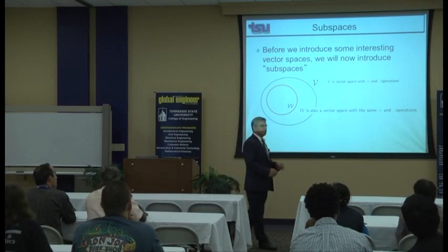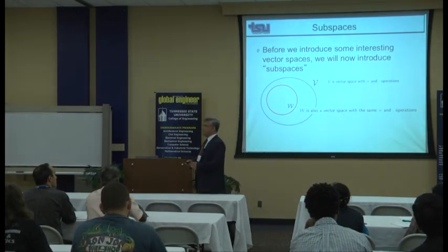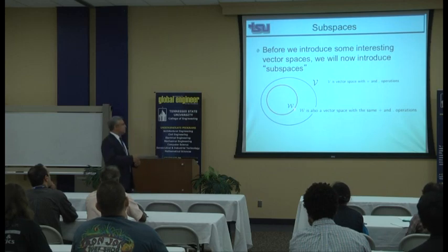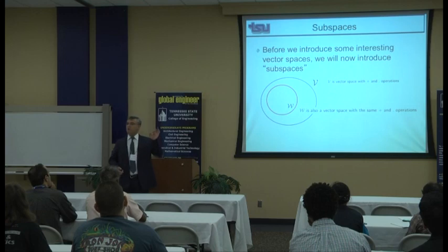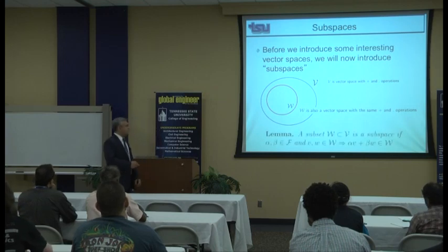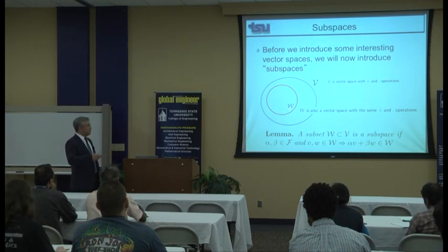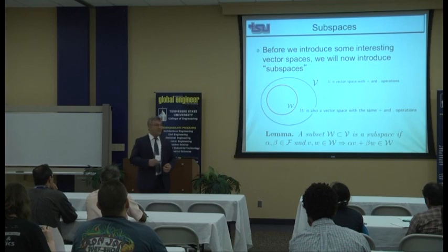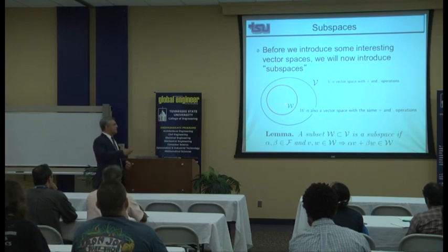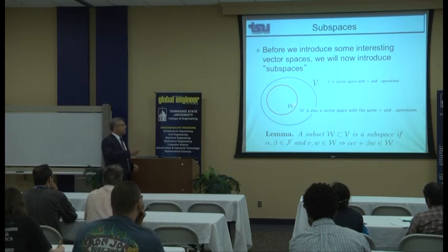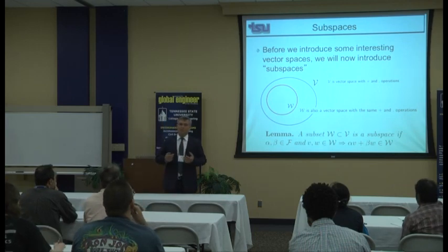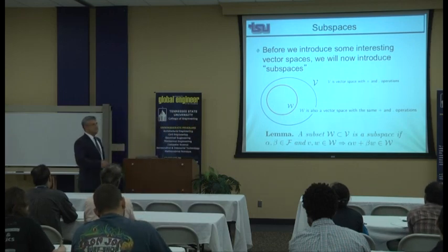There is something special about subspaces. If you know that W is a subset of V and V is a space, you don't need to check all ten properties to verify W is a subspace. All you need to check, by this lemma, is: pick any two elements of W and check if their sum is also in W, and take any element of W, multiply it by a scalar, and check if the new vector is also in W. That's all you need to check.